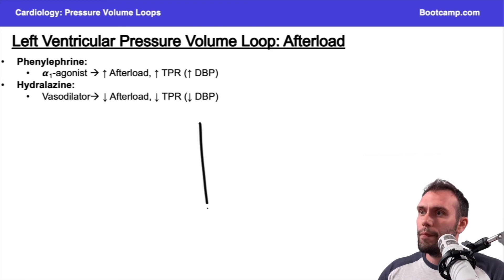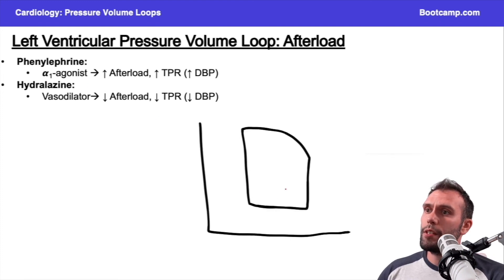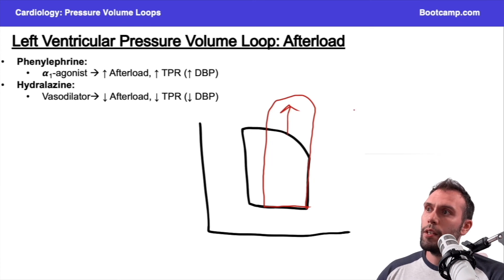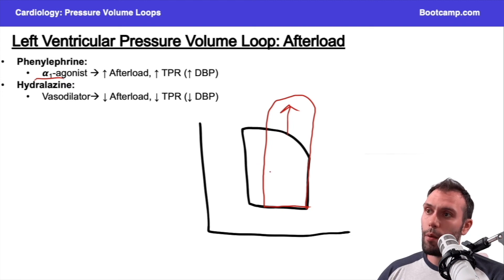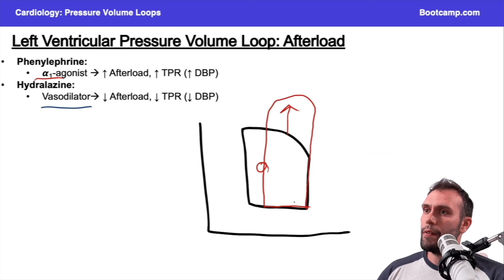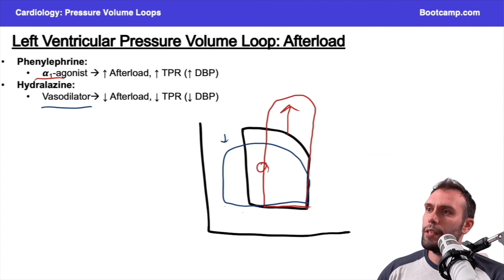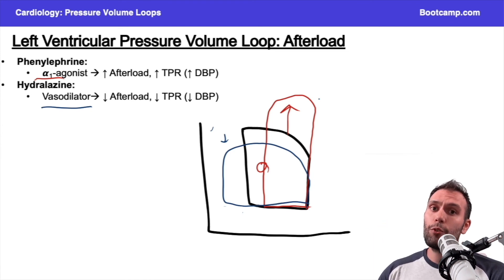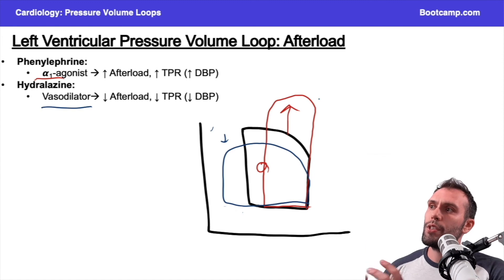For afterload: if I give phenylephrine, an alpha-1 agonist, afterload increases — the end-diastolic volume doesn't change, but I need a higher pressure to eject blood into the aorta, so the curve's height increases and the end-systolic volume increases with less blood ejected. Conversely, hydralazine is a vasodilator and has the opposite effect — decreased end-systolic volume and lower peak systolic pressures. Classic causes of increased afterload include aortic stenosis, aortic coarctation, and aortic clamping in surgery.